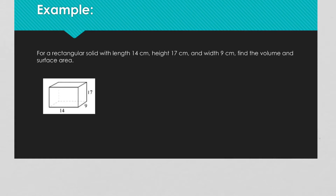So for the volume, you just take your length times your width times your height. Remember, it doesn't matter what order you multiply those in. So 14 times 9 times 17.